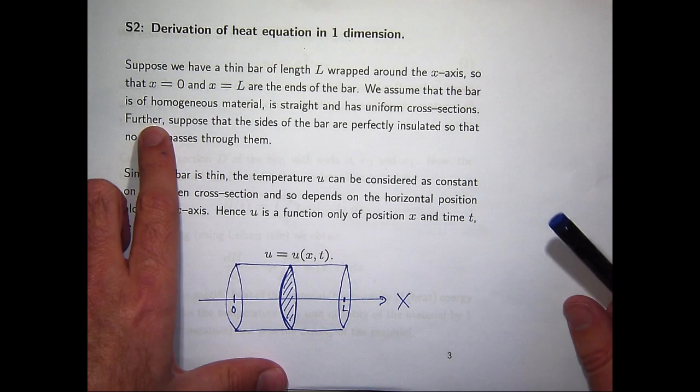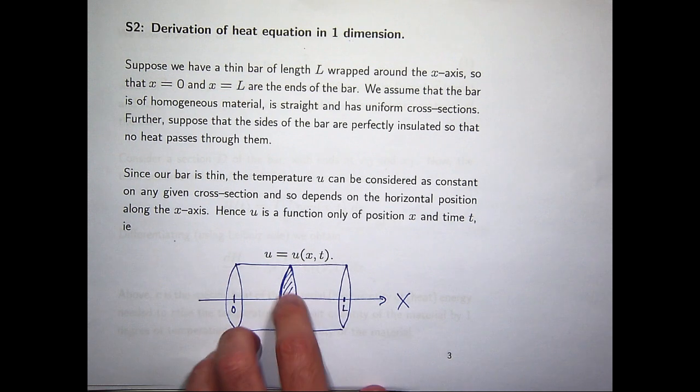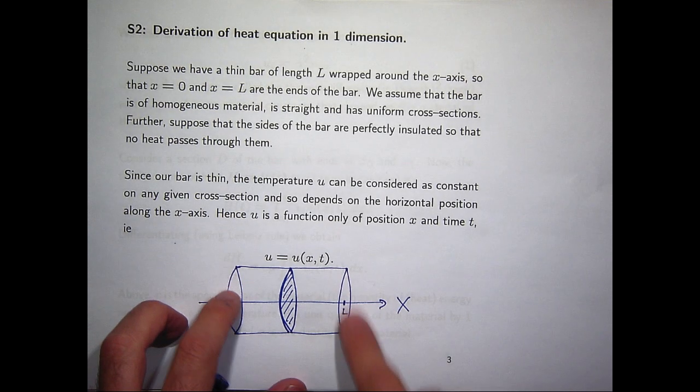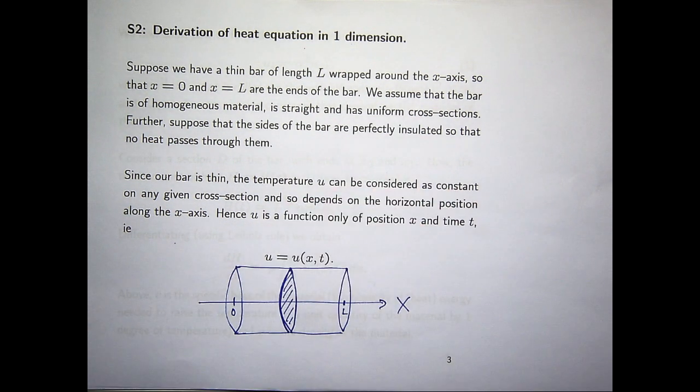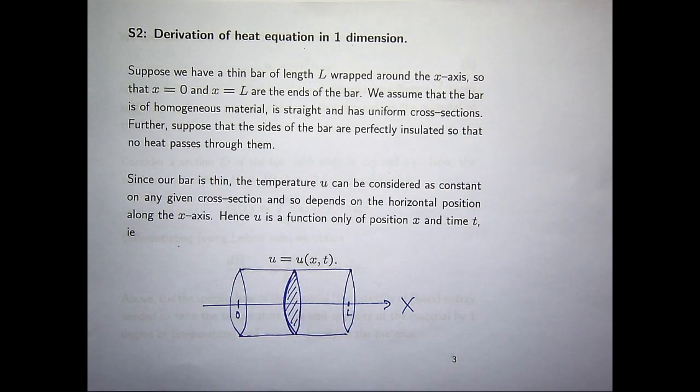Now we also make an assumption that the sides of the bar are perfectly insulated. So you can think about, in this picture here, think about the bar being wrapped in a sleeve. These ends are not wrapped, but think of encasing the sides of the bar in some sleeve, if you like. And in particular, one of our assumptions with this insulation is that no heat passes through that insulated side or sides.